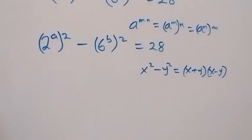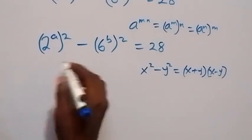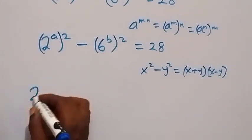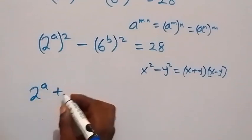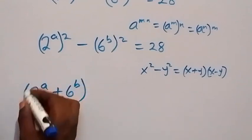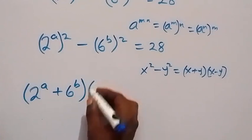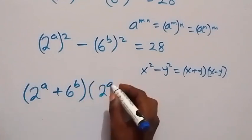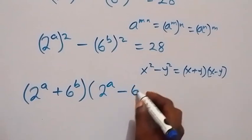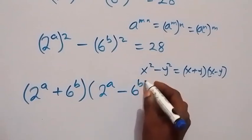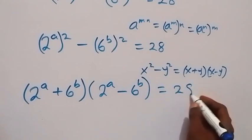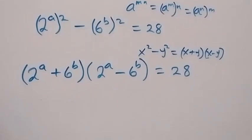So this will become: 2 raised to the power a plus 6 raised to the power b, multiplied by 2 raised to the power a minus 6 raised to the power b, equals 28.